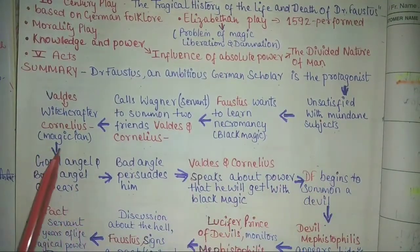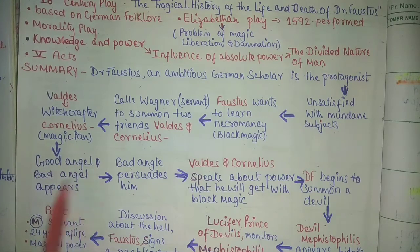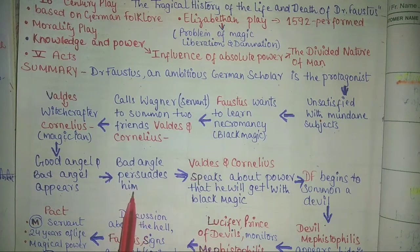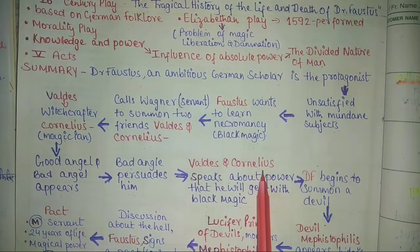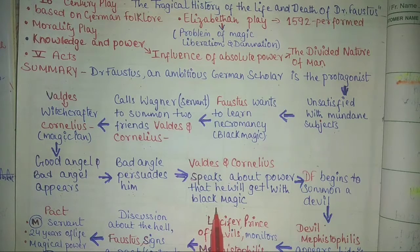At that point, when he was about to start learning black magic, a good angel and a bad angel appear. The good angel wants to warn him about the consequences of his act, but the bad angel persuades him and convinces him to continue with the task. Valdes and Cornelius also speak about the power he will gain with black magic. We see here that negative or bad influences always try to persuade us.